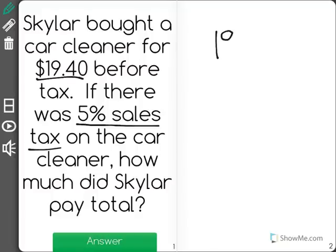So the way I'm going to do this is I know she already paid $19.40, that's the price. I'm going to find out the amount of the tax by multiplying $19.40 times .05.